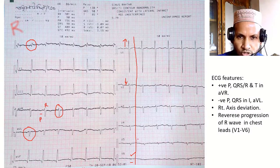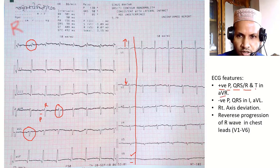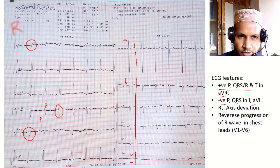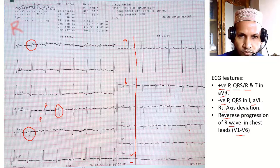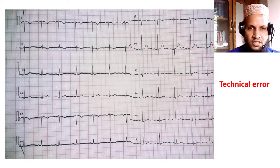These are the features of dextrocardia: positive PQRS in lead AVR (T is not mandatory), negative P and QRS in leads I and AVL, right axis deviation, and reverse R wave progression from V1 to V6.